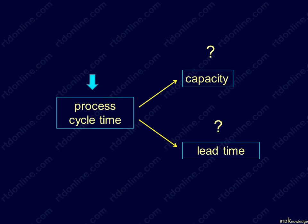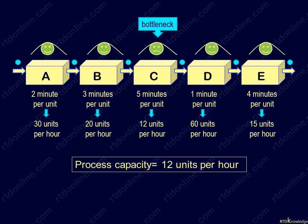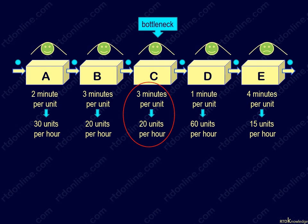Our process capacity in our previous example is 12 units per hour. Suppose by improving the efficiency of our bottleneck operator C, we can cut the cycle time from 5 to 3 minutes.